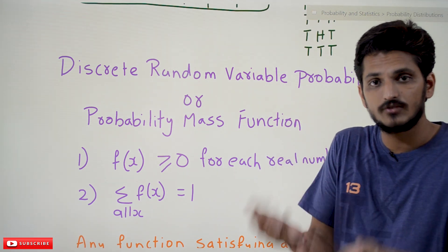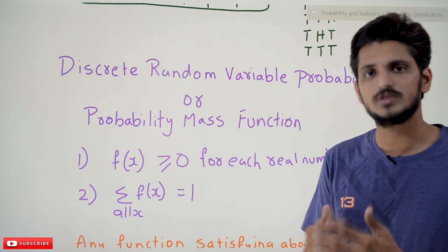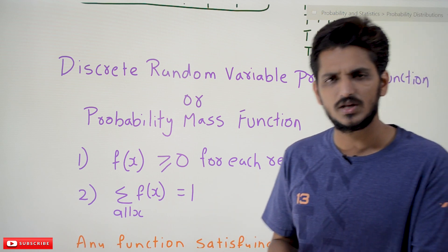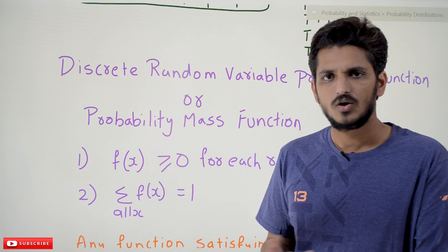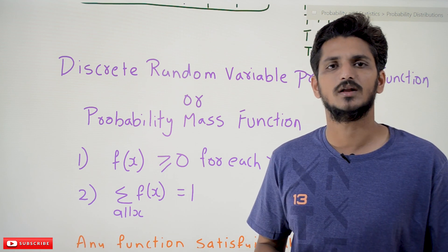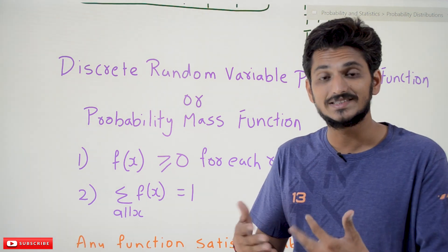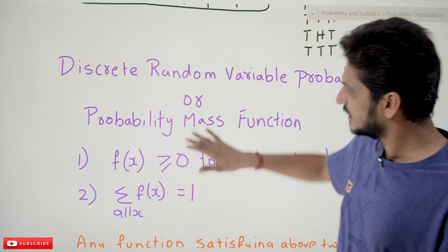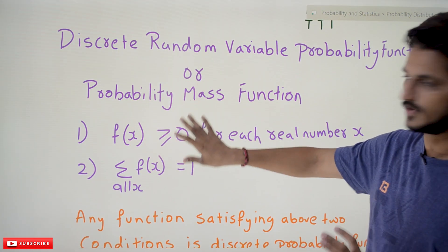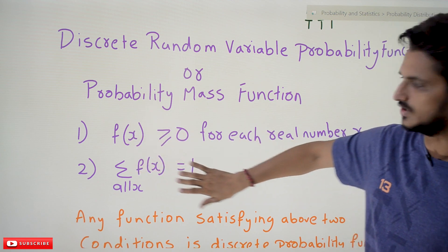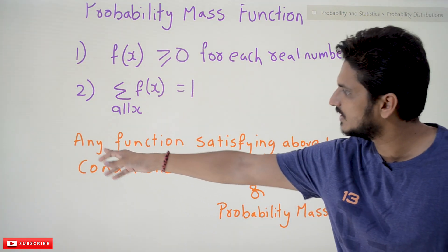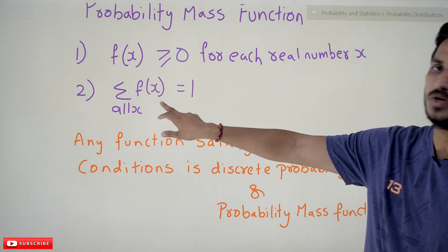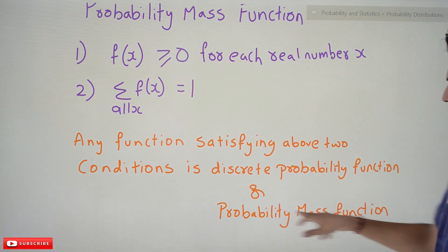Only if the function satisfies both conditions can we say it is a probability mass function and use it as such; otherwise we cannot. For example, y = x² cannot be used as a probability mass function. We will do examples in the next class to see which functions qualify. Any function satisfying both conditions is a discrete probability function, or probability mass function.